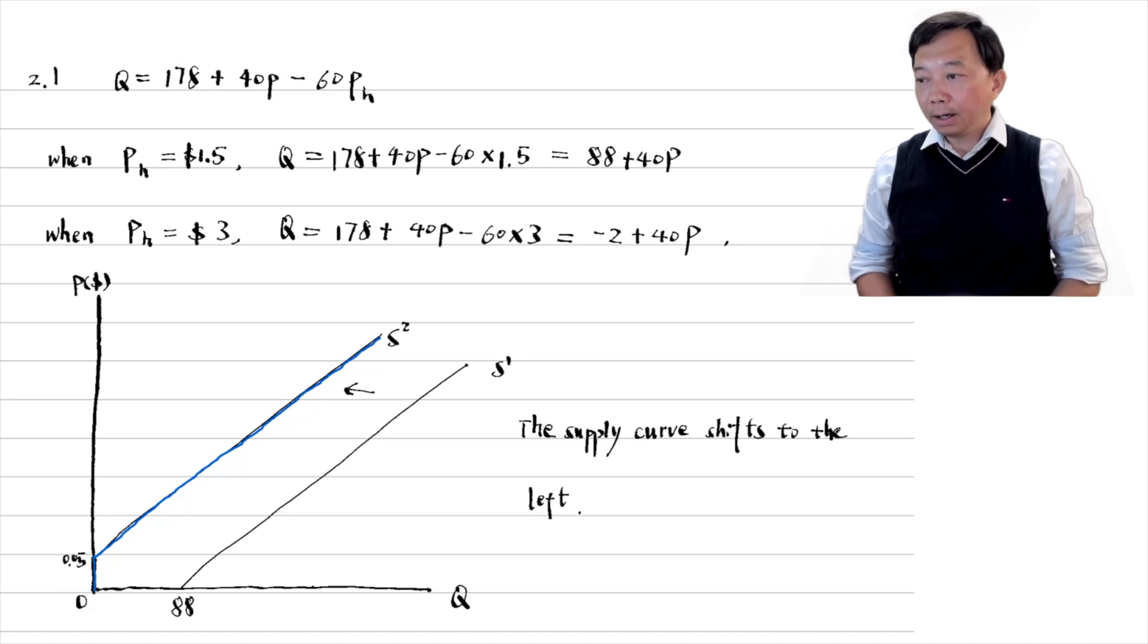By the way, we set the price equal to zero in the original supply function to find the intersection point with the quantity x axis, and we set the quantity equal to zero in the new supply function to find the intersection point with the price y axis. The new supply curve has a kink. The quantity supplied is zero when the price is below 0.05 dollars.